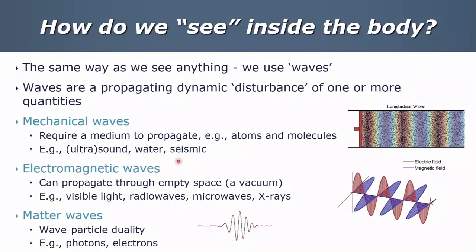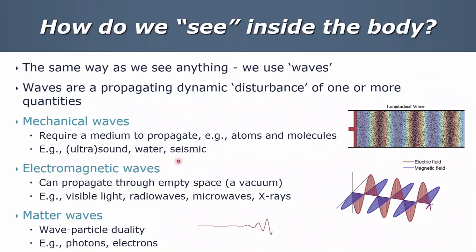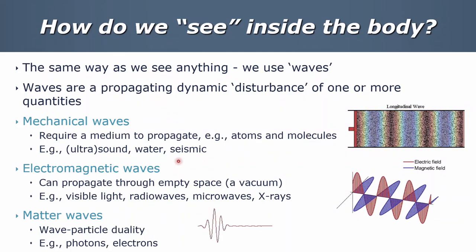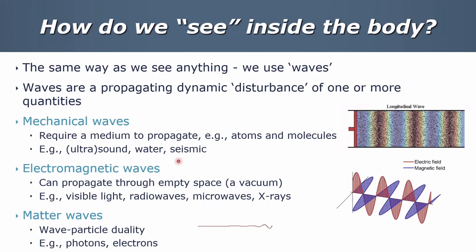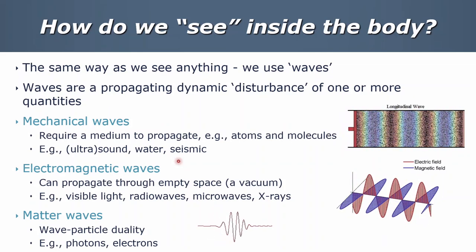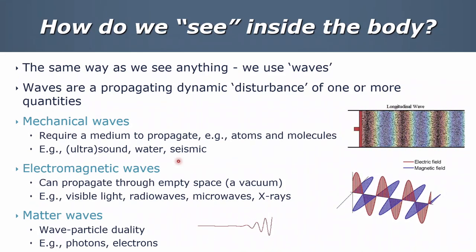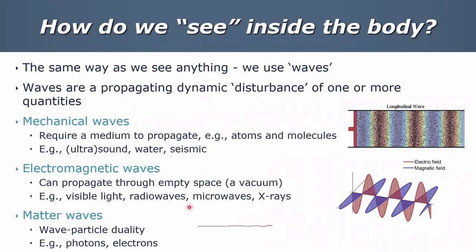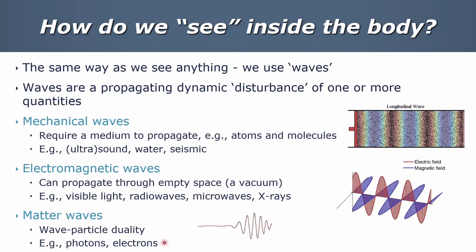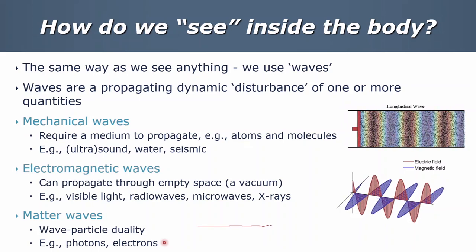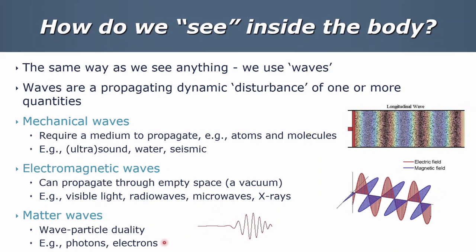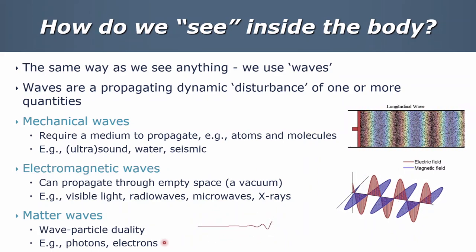We're also going to look at matter waves, a third type of waves. Many of you may be familiar with the concept of wave-particle duality, where we can think of photons as being waves as well as little packets of a certain duration. And electrons — we may think of them as little things orbiting the nucleus, but again we can think of these as also having a wave property.